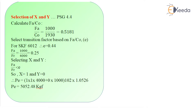For SKF6012, E is equal to 0.44. From the ratio of FA and FR equal to 0.25, we select X and Y. We find that the ratio of FA and FR is less than E, so we get X equal to 1 and Y equal to 0. Substituting all these values into the formula: PE equals 1 into 1 into 4000 plus 0 into 1000, whole multiplied by 102 multiplied by 1.0526. This gives PE equal to 5052.48 kgf.